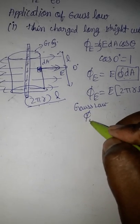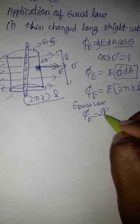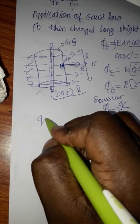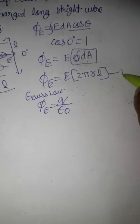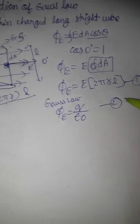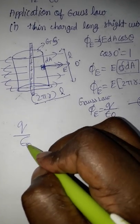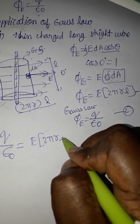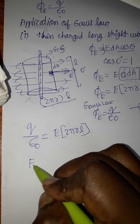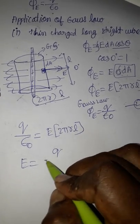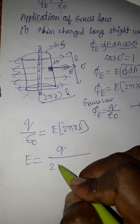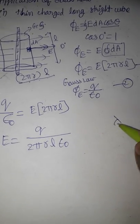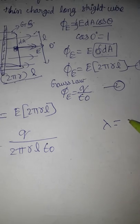According to Gauss's Law, electric flux equals charge q divided by epsilon naught. Equating the two expressions: q divided by epsilon naught equals E times 2πrl. Therefore, the electric field E equals q divided by 2πrl times epsilon naught.